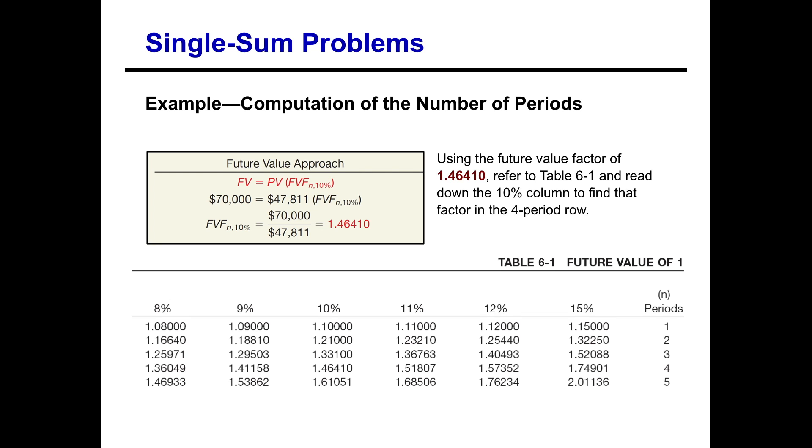So we have $70,000 is equal to $47,811 times our unknown or our x. In this case, the future value factor. So we're going to divide both sides by the $47,811 to get the future value factor on one side by itself, just like we're solving an algebraic expression for our x, our unknown.